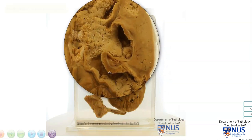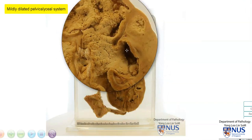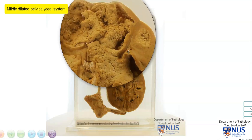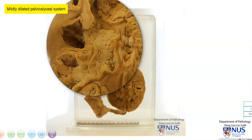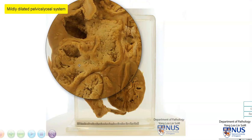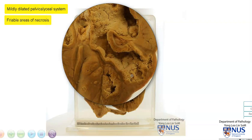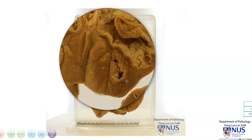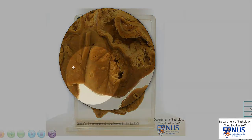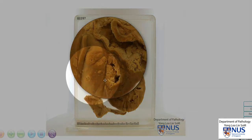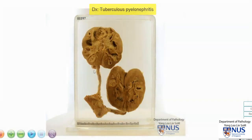It appears to be somewhat dilated and also with some degree of blunting of the calyces, but the most striking abnormality is the presence of this yellowish, friable, sloughy material lining the renal pelvis. In fact, if we look carefully, we can also see a few paler areas within the renal parenchyma itself. This is an example of tuberculous pyelonephritis, where TB has actually involved the pelvicalyceal system of the kidney.